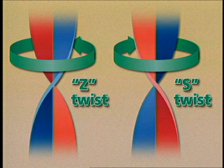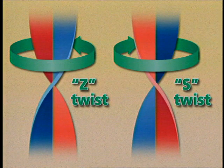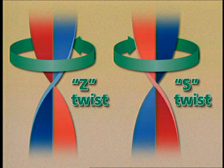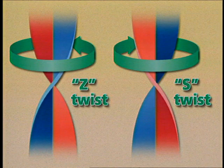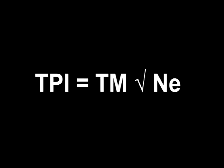Both ring and air jet spinning systems can be set up to produce S twist when required. Twist multiple, or TM, is a common way of designating how much twist a yarn contains. TM is a relationship between yarn number or count and the turns per inch in the yarn, using number English or cotton count.